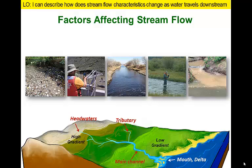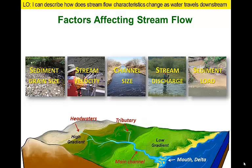A typical stream channel is supplied by additional water from tributaries that connect to a main channel, and forms a delta where it empties into an ocean or lake. We will examine how various characteristics of stream flow vary along the length of the stream.